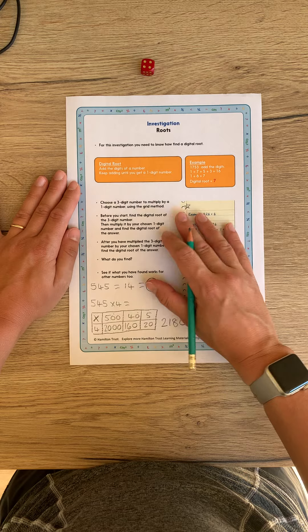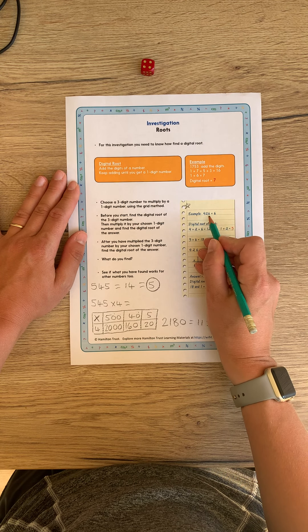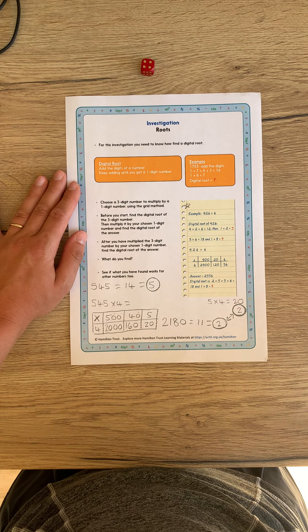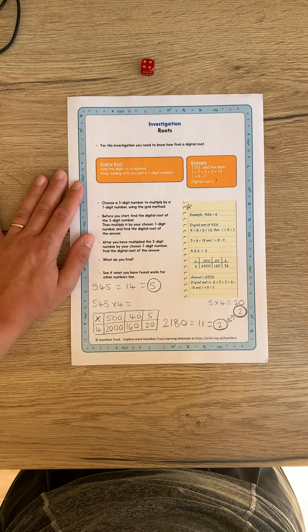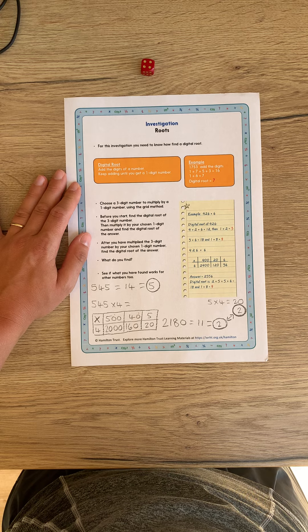Find your own number sentence with a three-digit number multiplied by a one-digit number and give it a go. And then if it works, give it another go. Are there any exceptions to the rule? I'd be interested to know. Enjoy the lesson today.